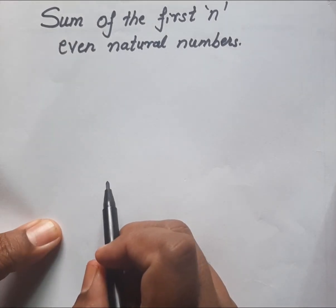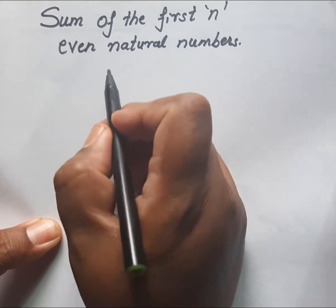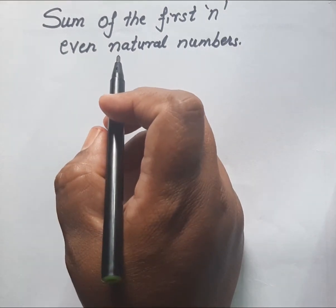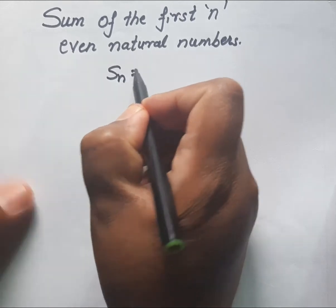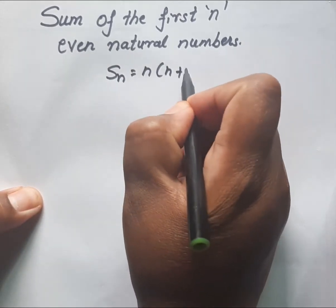Hello everyone, today we will study the sum of the first n even natural numbers. The formula for the first n even natural numbers is Sn equals n bracket n plus 1. This is the formula.